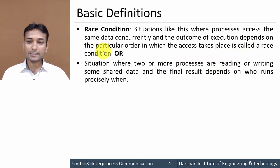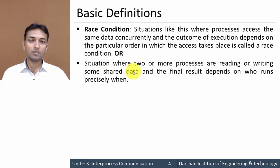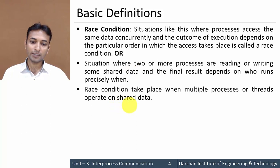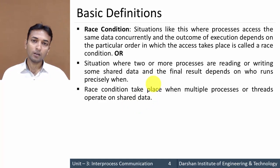We can also say that race condition is a situation where two or more processes are reading or writing some shared data and the final result depends on who runs precisely when. Race condition always takes place when multiple processes or multiple threads operate on the same shared data or resource.